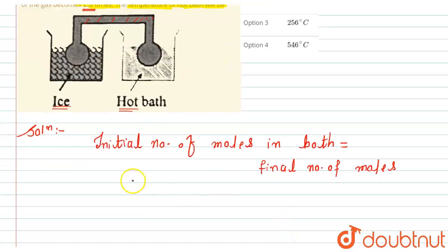Now let us say initially the initial number of moles for the first bulb, means the bulb which is in ice, is n₁. And for hot bath it is n₂. This should be equal to final number of moles, that is let's say as n₁' plus n₂'.